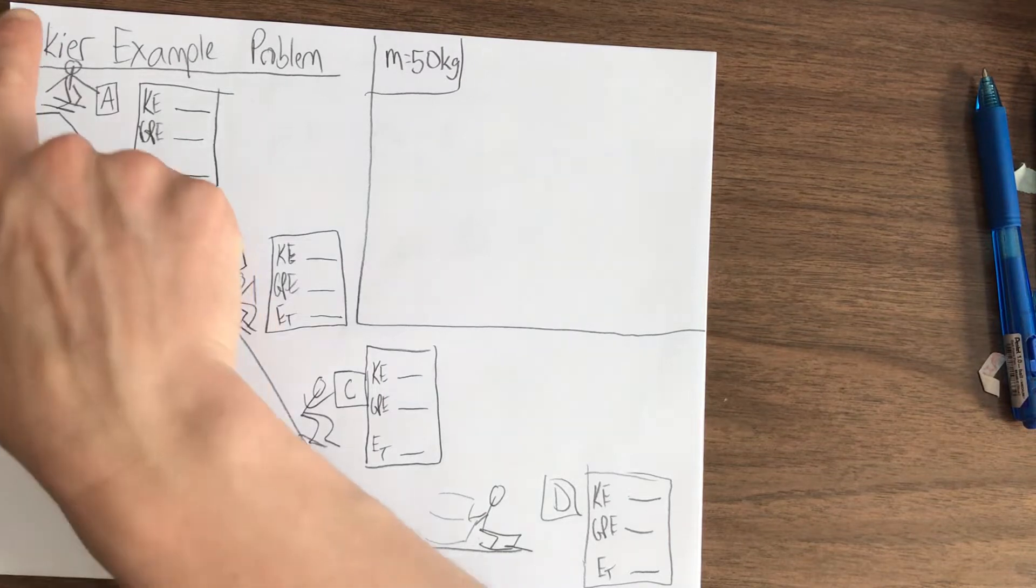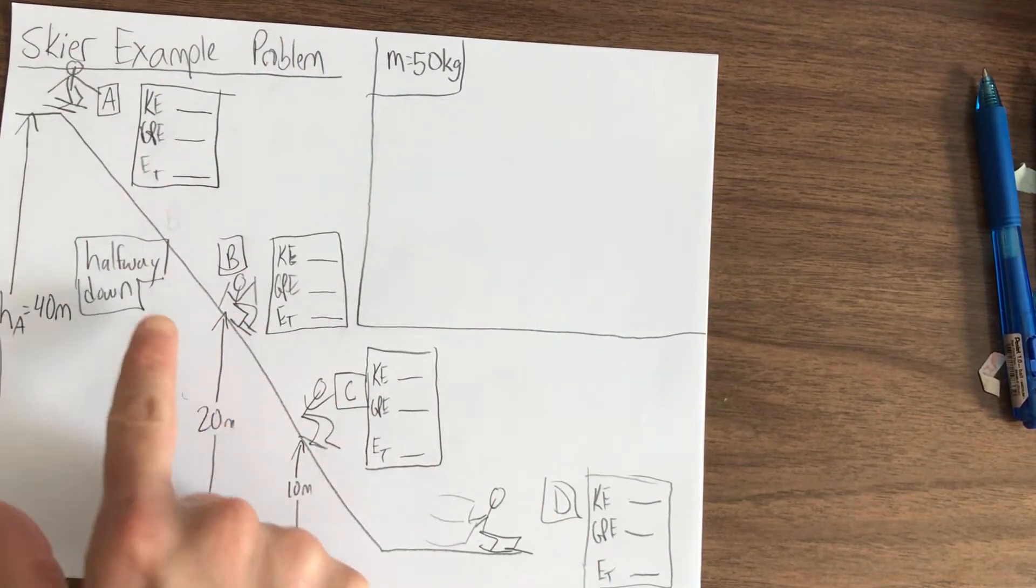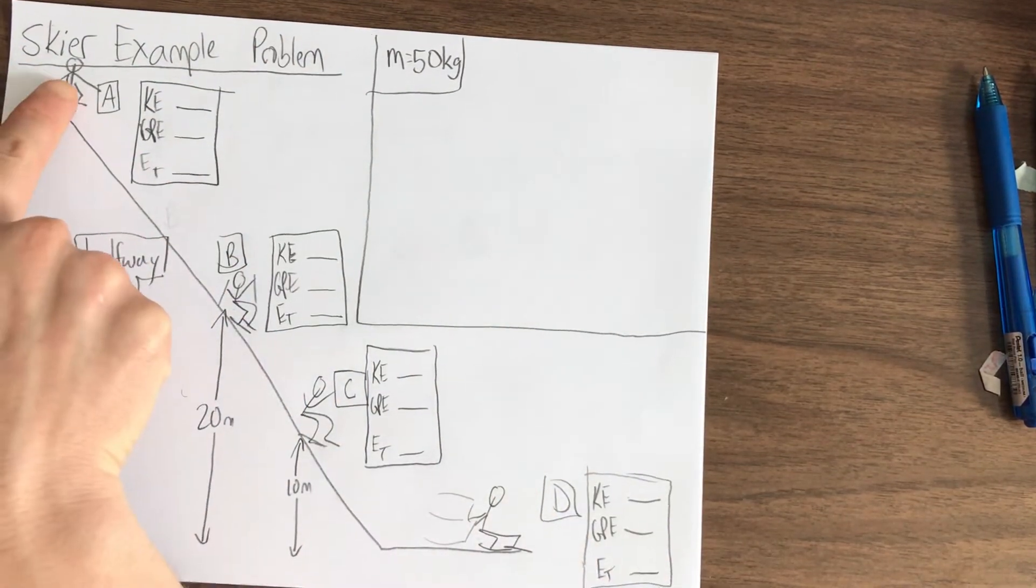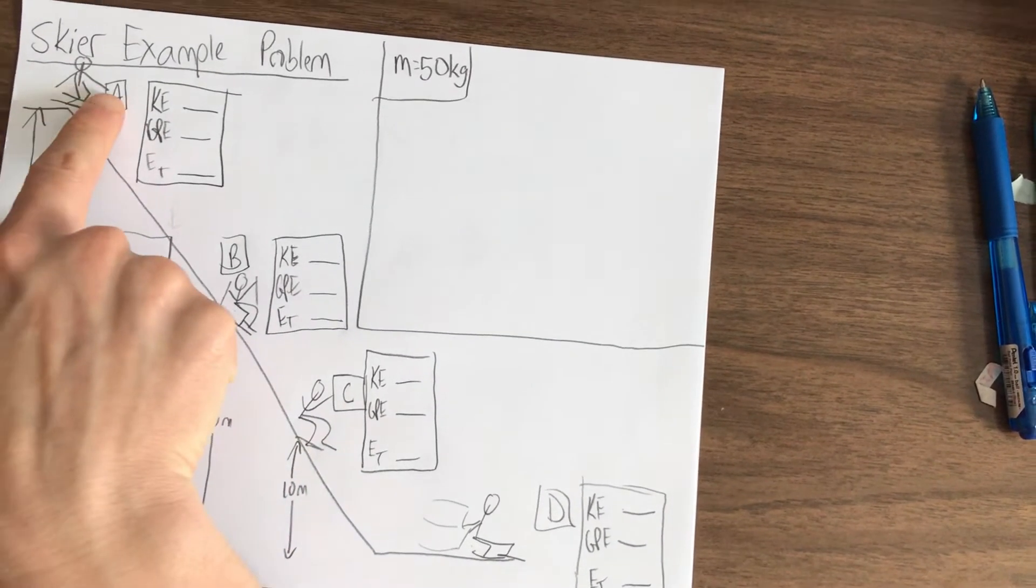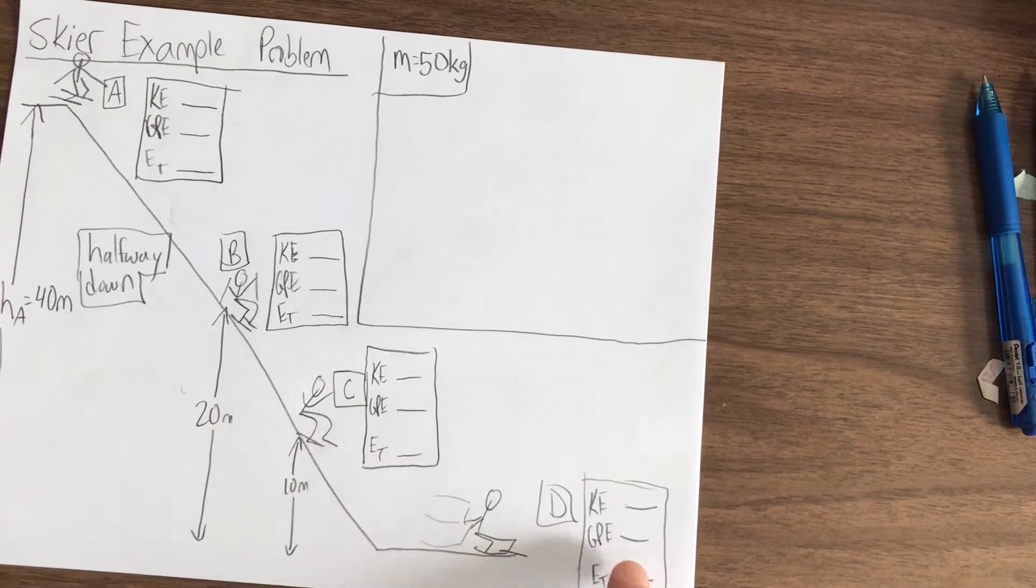A few things I'd like to point out: we've got the title, we have the ski slope here, we have the skier at four different positions, they're labeled A, B, C, and D.